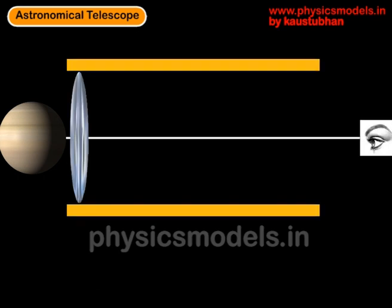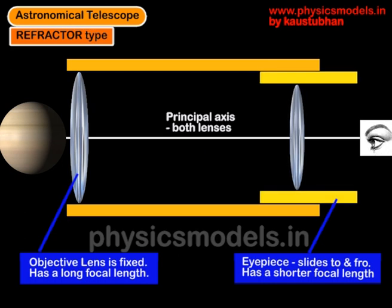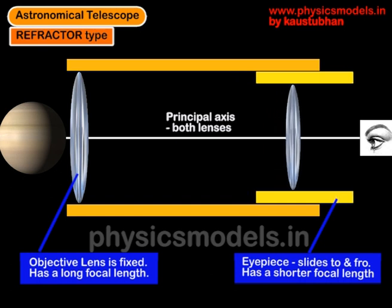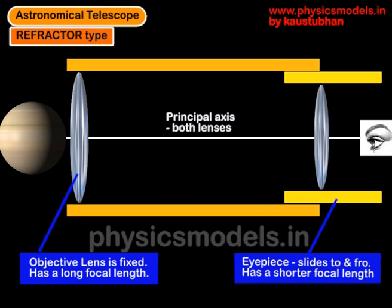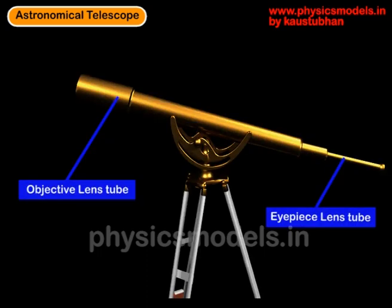Now the construction of the telescope goes like that. There is a convex lens on the left hand side called the objective lens which collects all the light from the planet. On the right hand side there is a smaller convex lens called the eyepiece lens and it can move to and fro in order to focus properly on the planet. Looking at our ancient telescope, the thicker tube is the objective lens tube on the left and the adjustable eyepiece lens tube is the thinner one on the right.